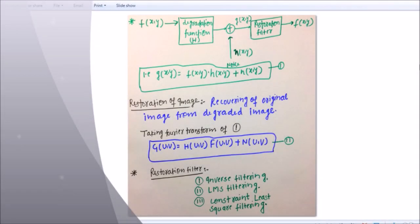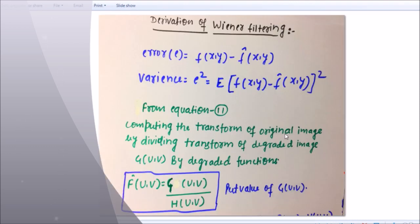I'm going to explain about Wiener filtering. Wiener filtering is also called LMS filtering. This is a very important topic — it holds approximately 14 marks in the GATE examination and is also important for KATE and IES exams. I will explain only the theory; if you understand the theory, you can solve the questions as well.